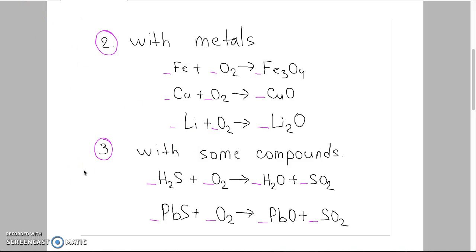When oxygen reacts with some compounds, the oxides of each element form. For example, when hydrogen sulfide reacts with oxygen, both oxides are formed: oxide of hydrogen and oxide of sulfur. When lead sulfide reacts with oxygen, we have both oxides in products: lead oxide and sulfur dioxide.